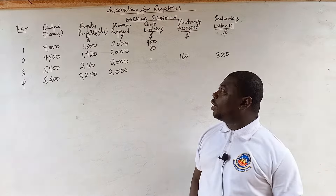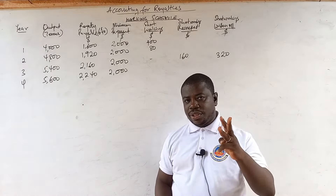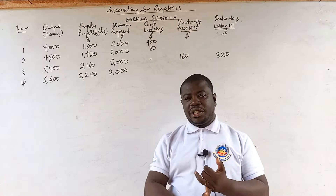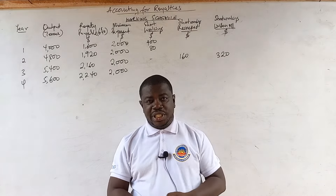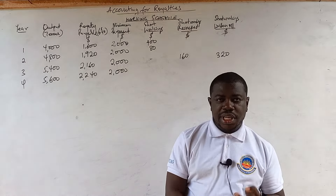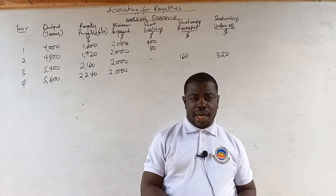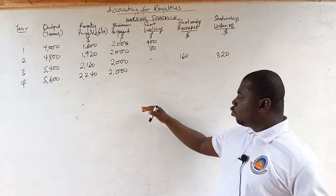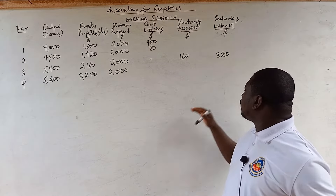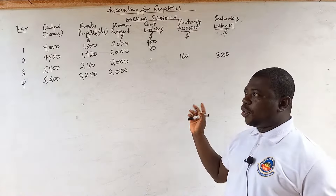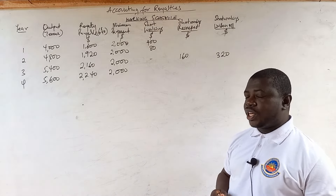Now that the working schedule is done, we prepare three accounts: the Royalty Payable Account, the Landlord Account (de-Homaji's Account), and the Short Workings Recoverable Account. We will prepare the Royalty Payable Account first, then the Landlord Account and the Short Workings Recoverable Account.